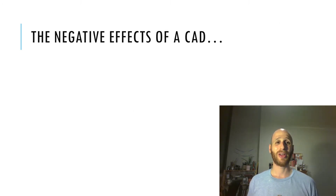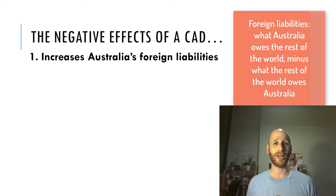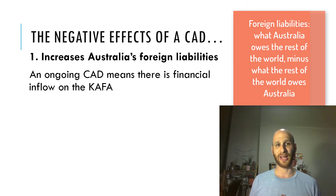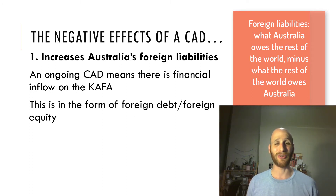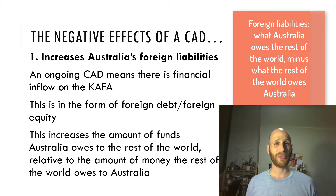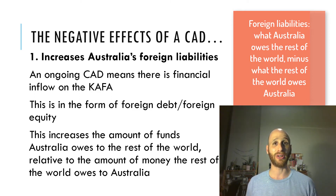First, let's look at the negatives. When a country has a current account deficit, it will increase the country's foreign liabilities. An ongoing CAD means there is a financial inflow on the CAFA — a capital and financial account surplus. This surplus, or inflow of capital, is in the form of foreign debt and foreign equity. This increases the amount of funds Australia owes to the rest of the world relative to the amount the rest of the world owes Australia. So a CAD requires a CAFA surplus, which means Australia is increasing its foreign liabilities.